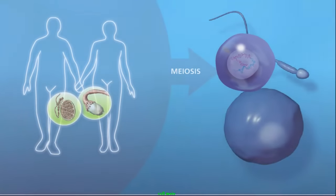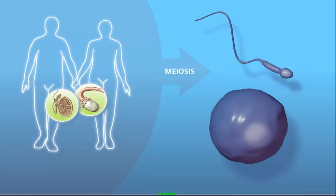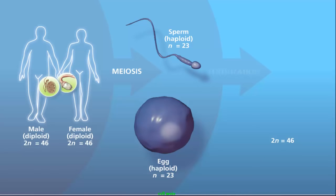The haploid daughter cells will specialize into gametes, either sperm or egg. These fuse in fertilization to form a zygote, which will grow into a child.